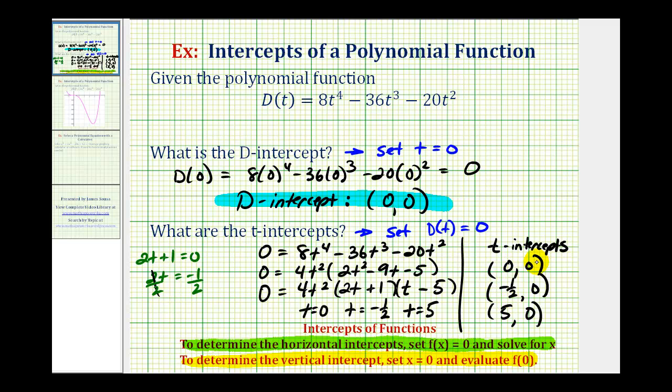Remember for the t-intercepts, the y-coordinate, or in this case the d-coordinate, is equal to zero each time.